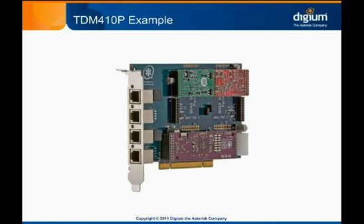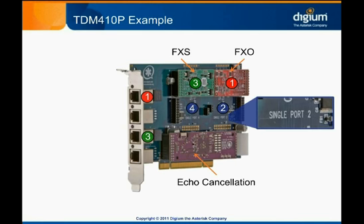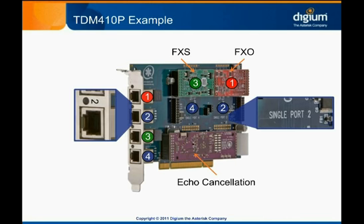Shown here is a 4 port Digium TDM410P card, with one FXO module installed at port 1 and one FXS module installed at port 3. Also pictured is the hardware echo cancellation module. The port numbers on the card are labeled on both the face of the card and on the external bracket where the RJ11 jacks are.